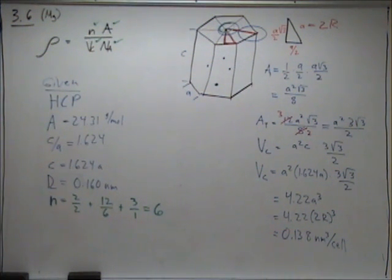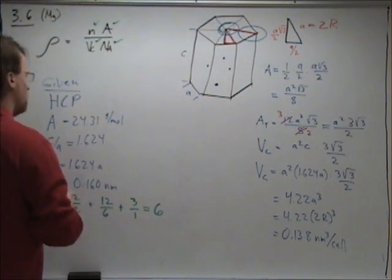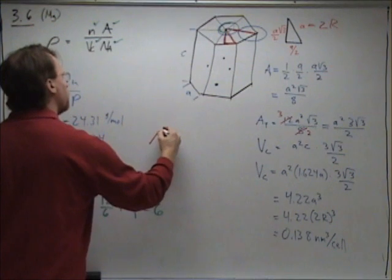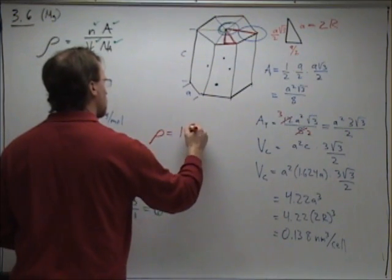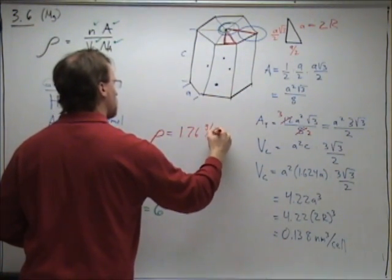Completing the calculation, we get a density of 1.76 grams per cubic centimeter.